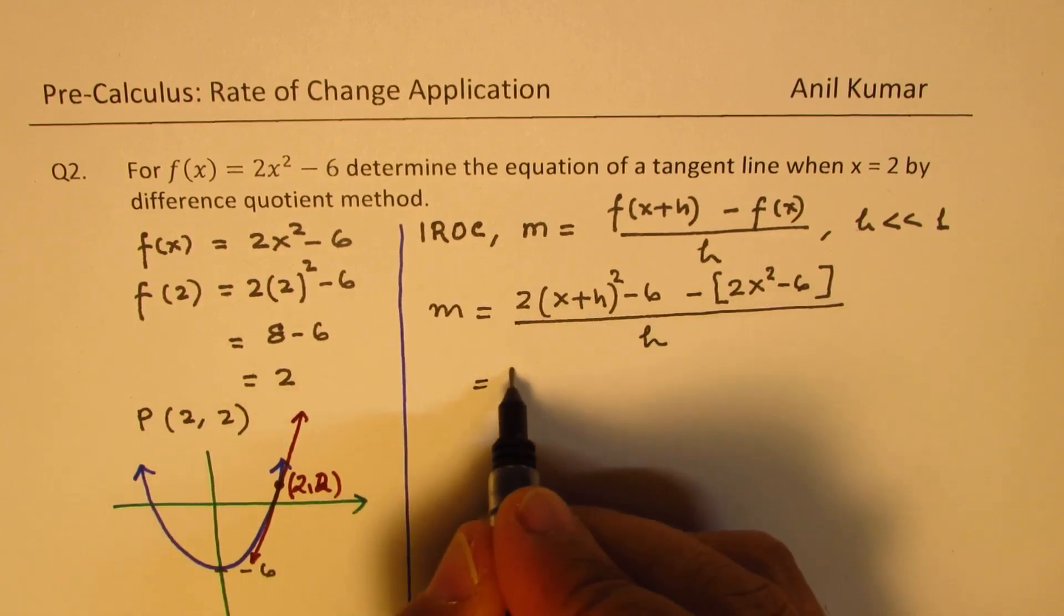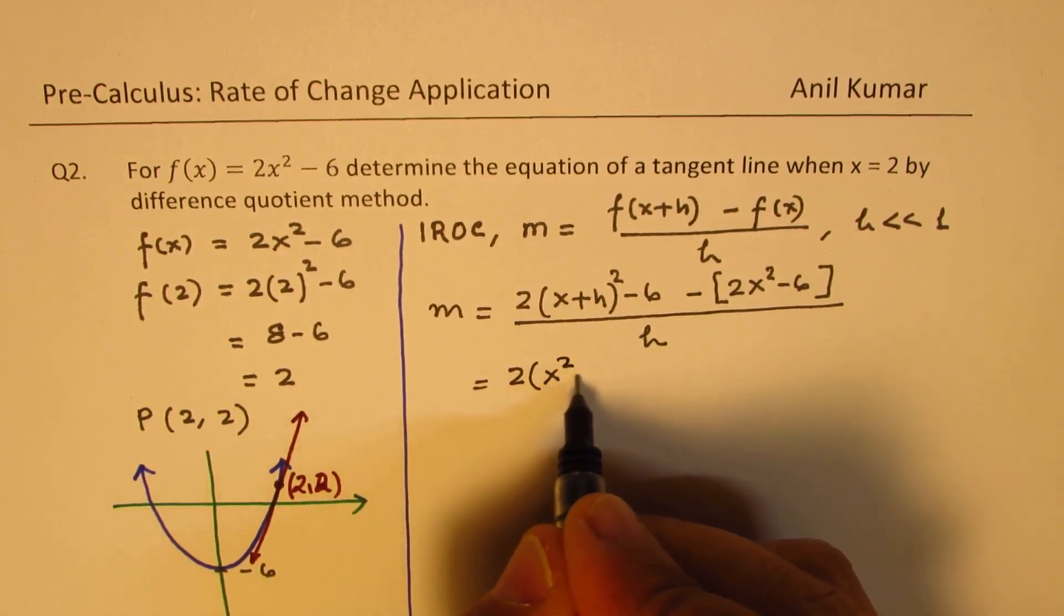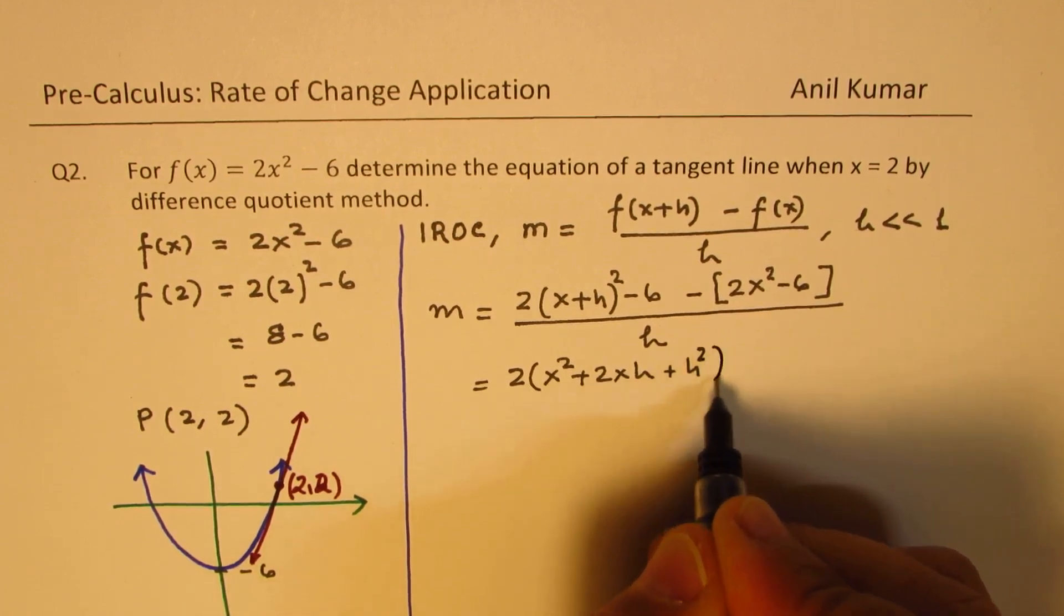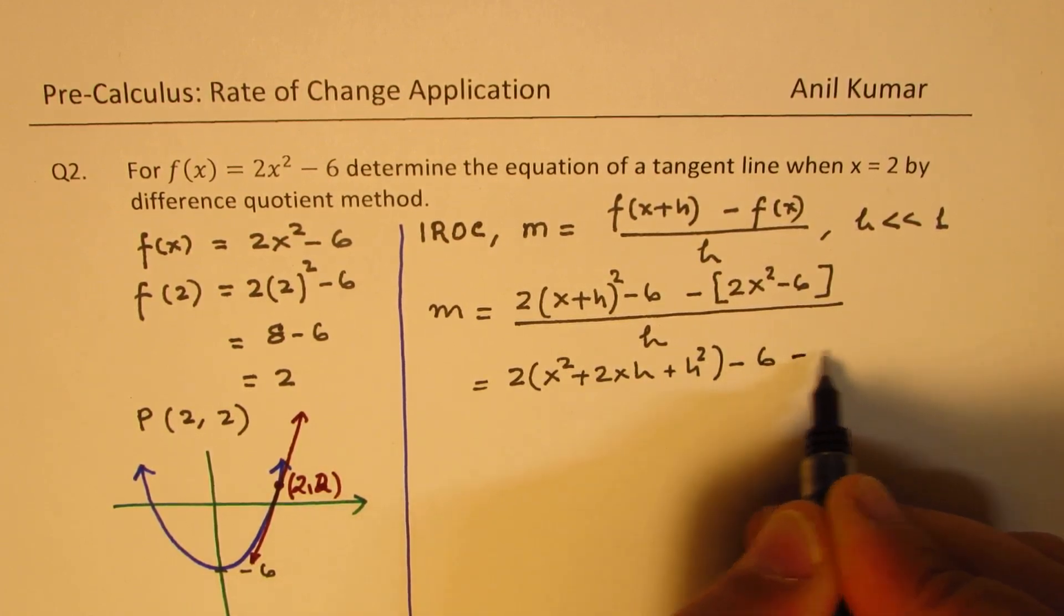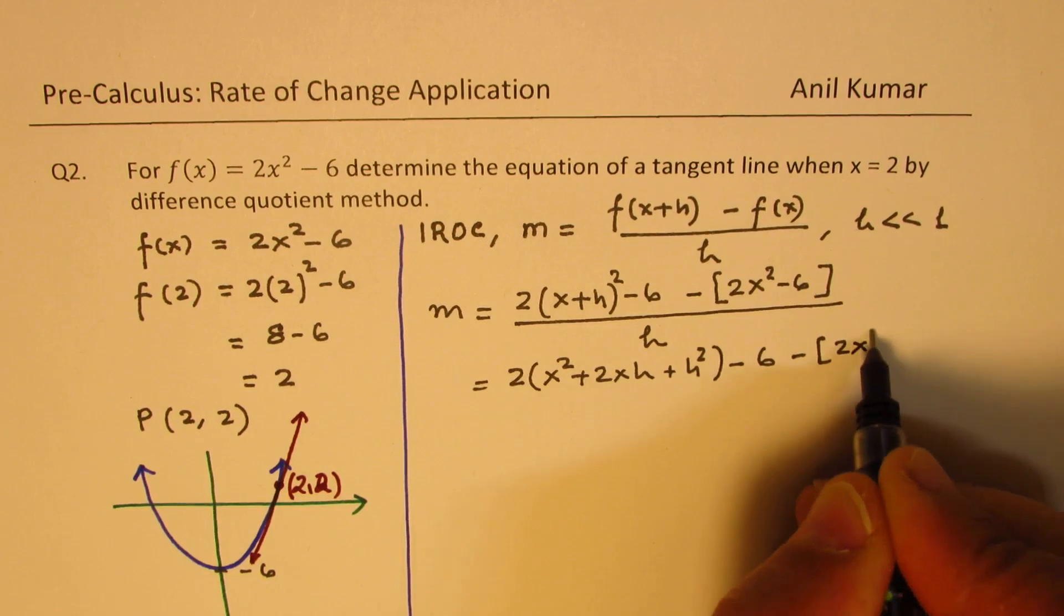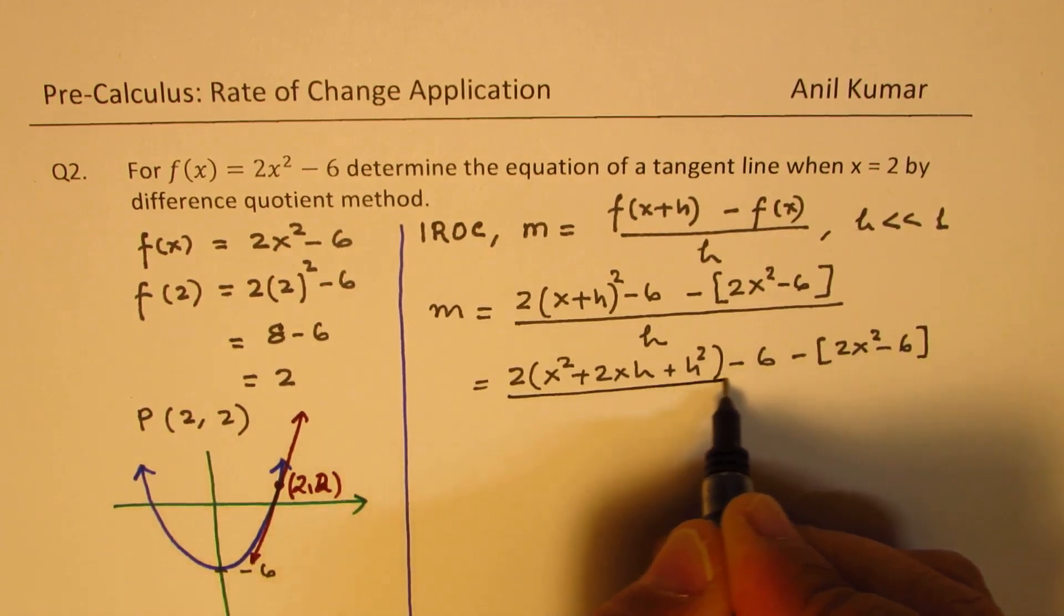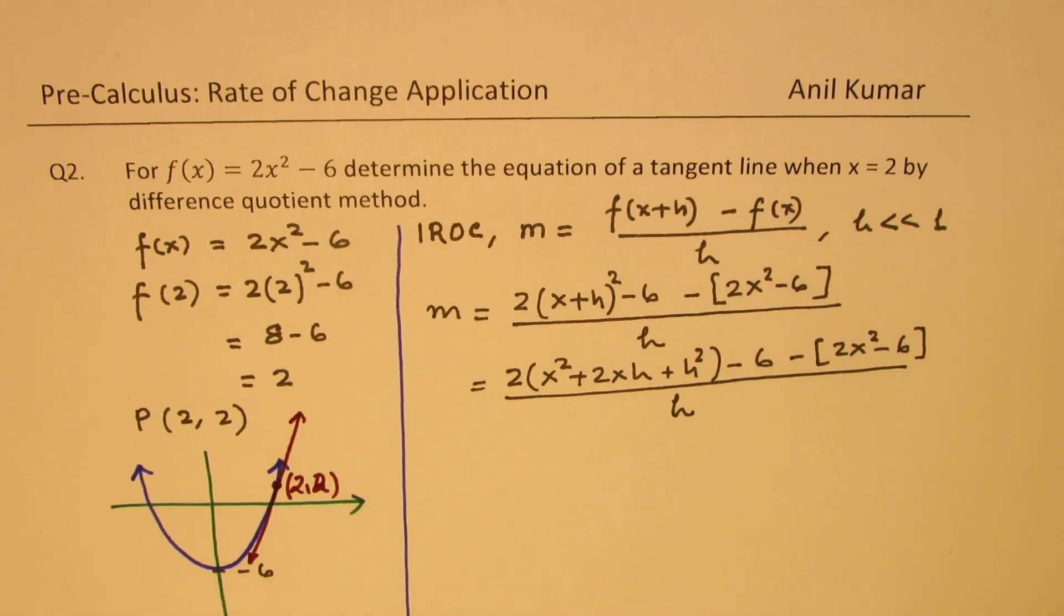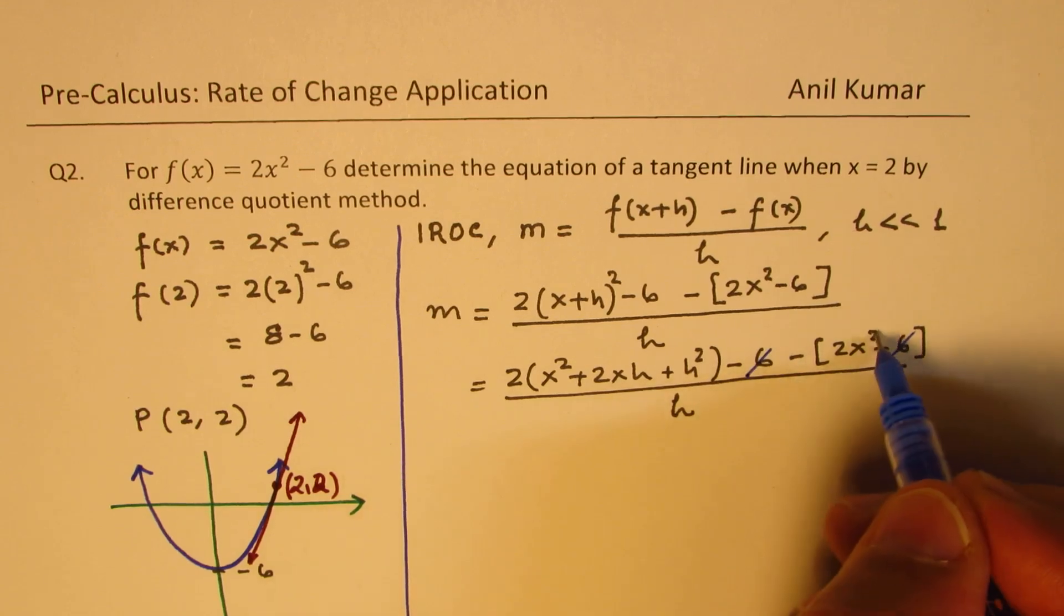So we can expand this. So we get 2 times x² + 2xh + h² - 6. And within this bracket, we have 2x² - 6. So whenever you apply this method, you will understand that these terms will always cancel. So these terms, both of them, will cancel.